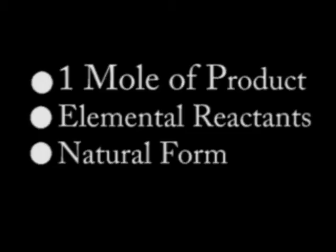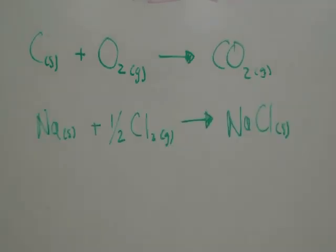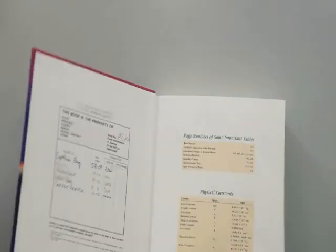To simplify this, it's how much energy it takes to form only one mole of a compound from just its elements, and these elements must be in the same form that we normally find them in nature. So like, how much energy it takes to form this, or this, or this.